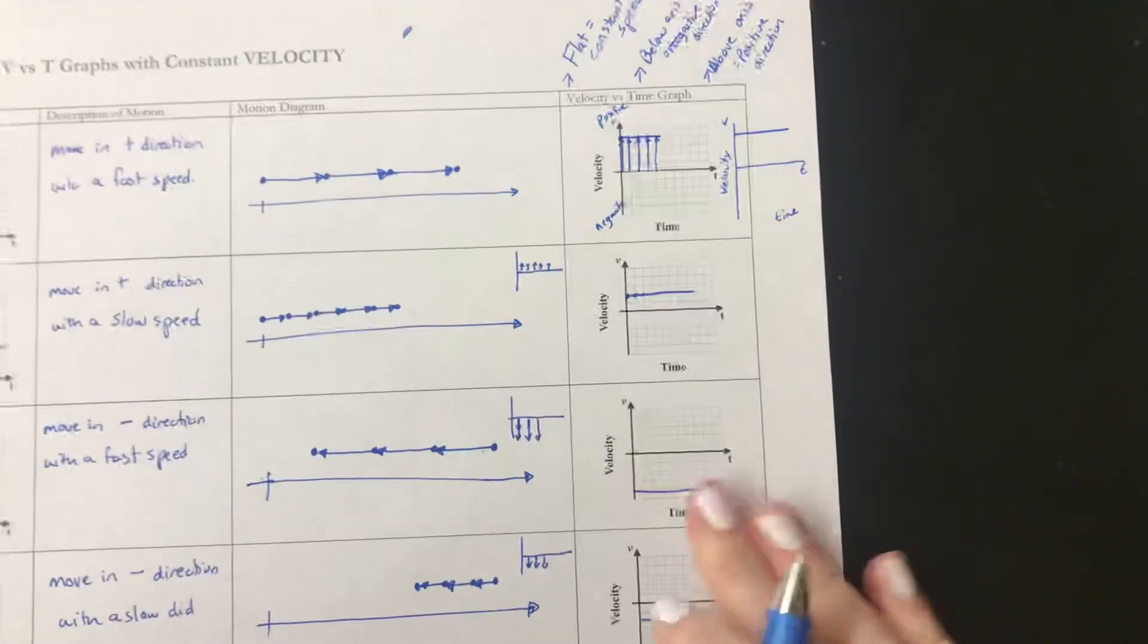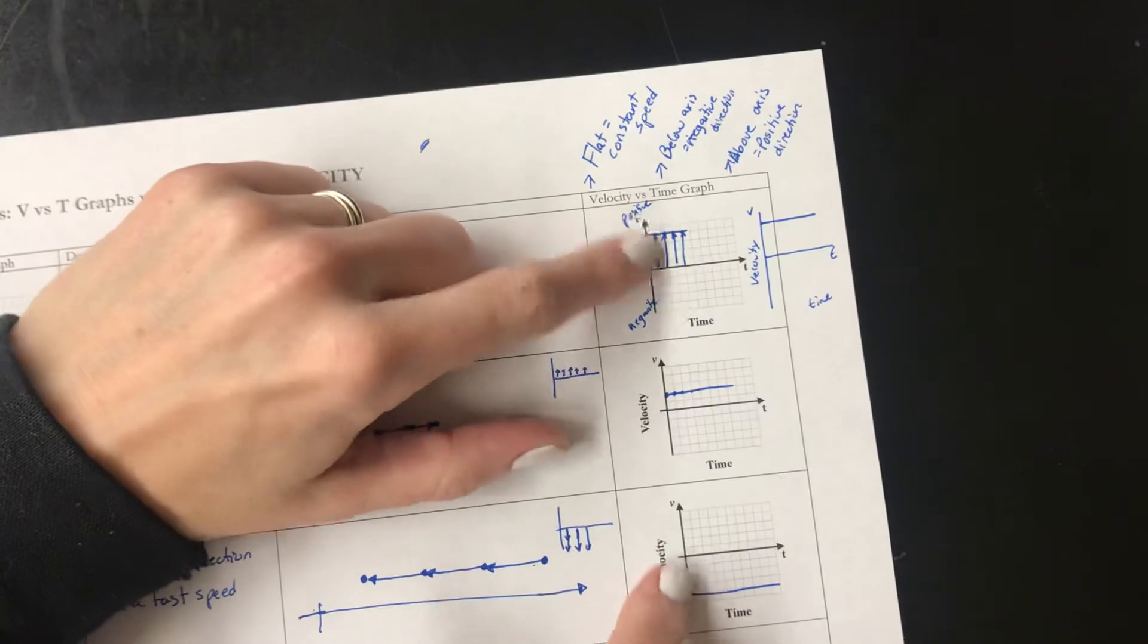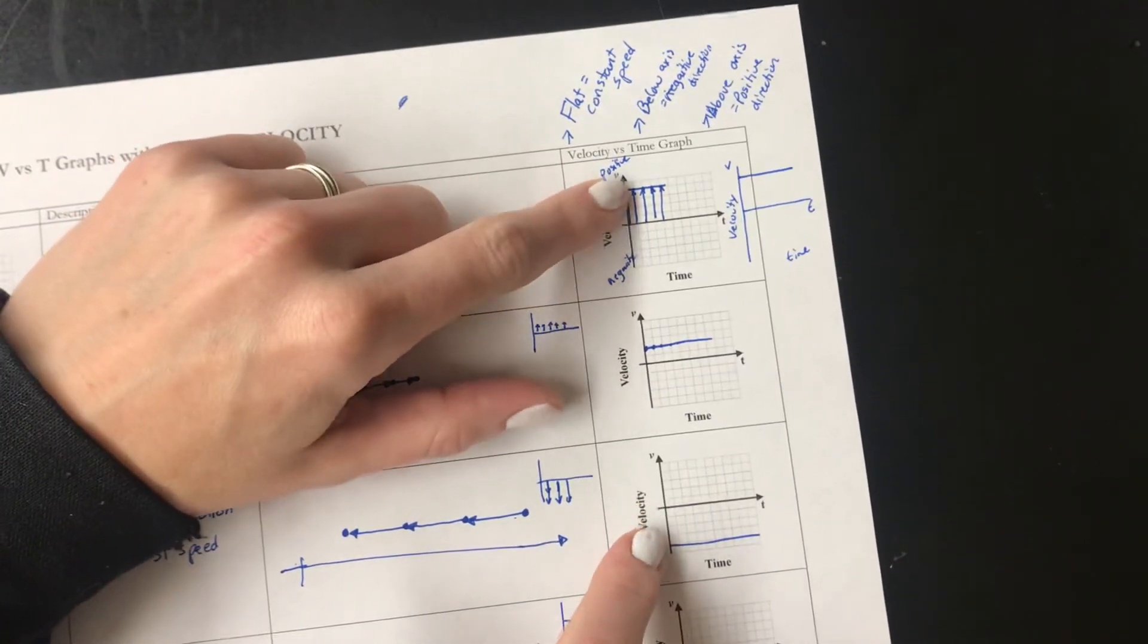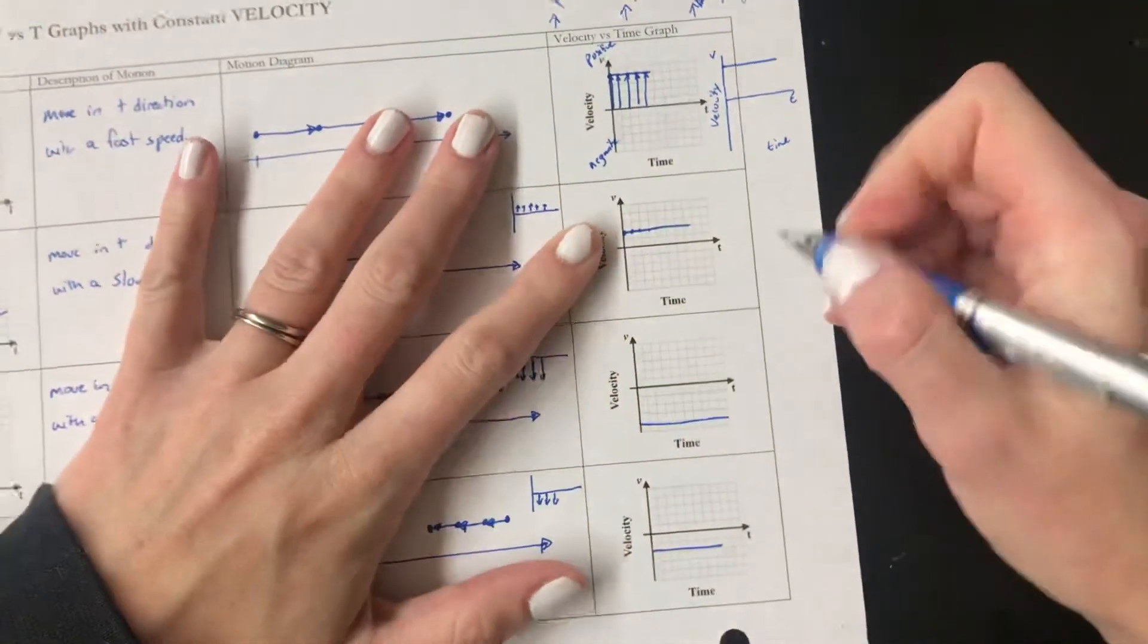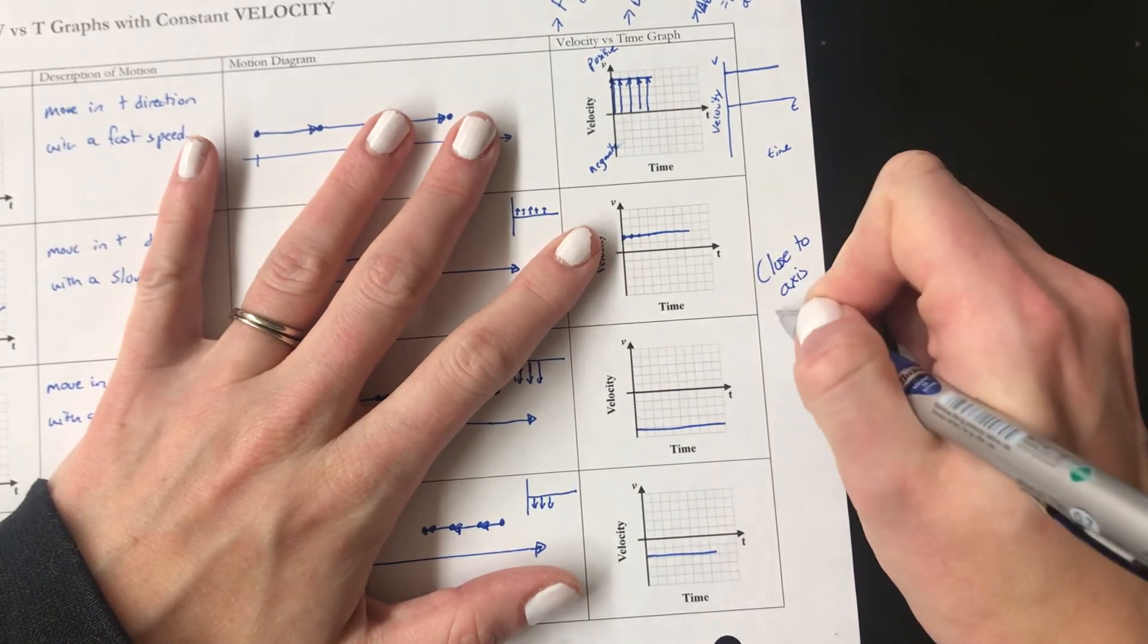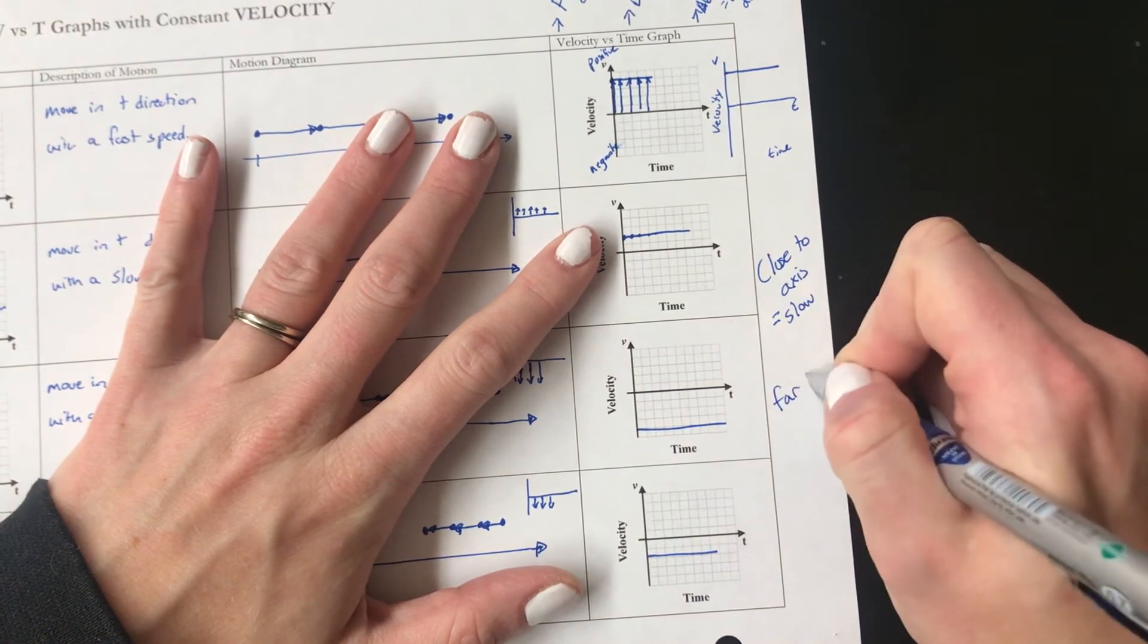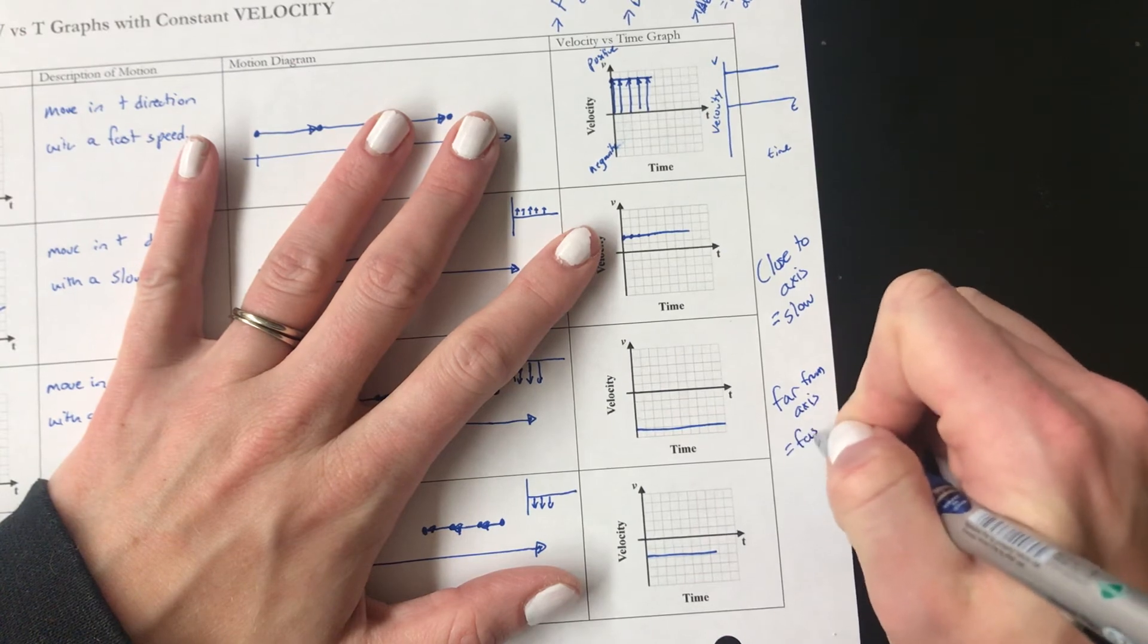And how do we distinguish between fast and slow? So our fast ones are here. Do you see how it's far away from the axis? Maybe that's the best way to distinguish them. So these are far from the axis and these are close to the axis. So I'm going to put that here. Close to the axis means slow and far from the axis means fast.